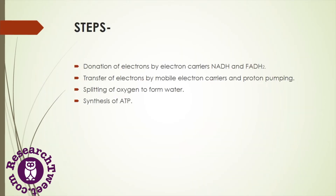The steps of the electron transport chain begin with the donation of electrons by electron carriers NADH and FADH2. Then the transfer of electrons by mobile electron carriers and proton pumping occurs. In the third step, molecular oxygen splits into two atoms and forms water with hydrogen ions. In the final step, ATP synthesis takes place with the enzyme ATP synthase.